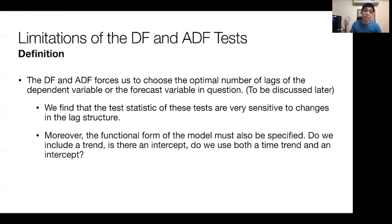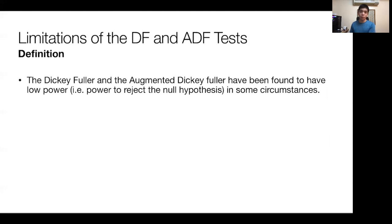Moreover, the functional form of the model must also be specified. As I mentioned earlier, do you really need an intercept? Do you really need a drift parameter? Do you really need a time trend? Should you just not have any of those, or would you need a combination? You don't necessarily know at the outset if you need those, but the test requires you to specify this.